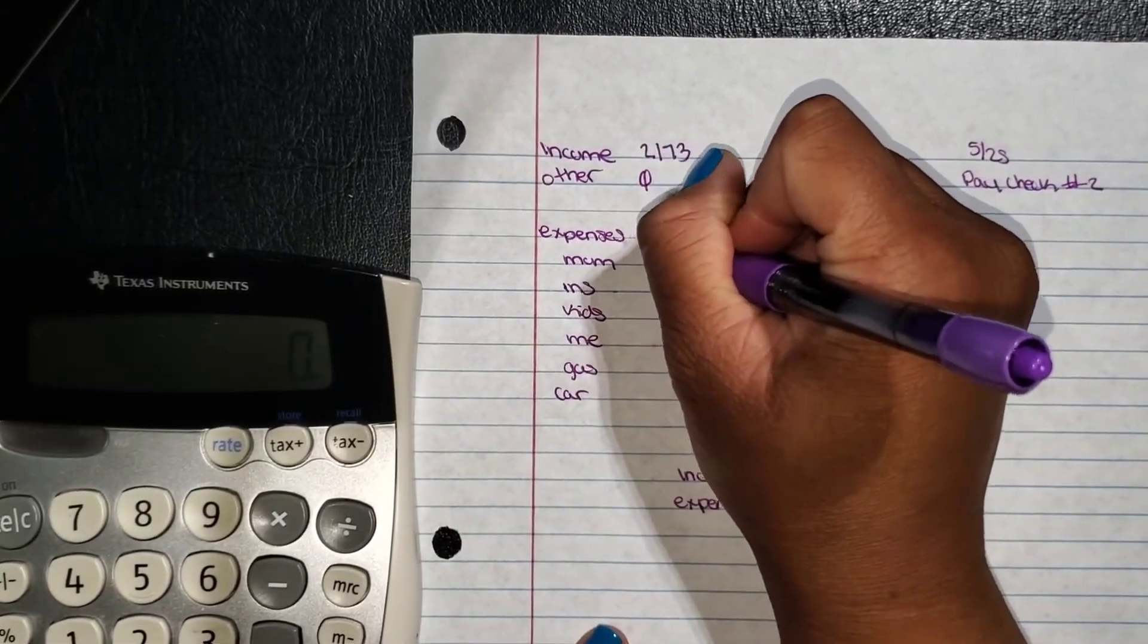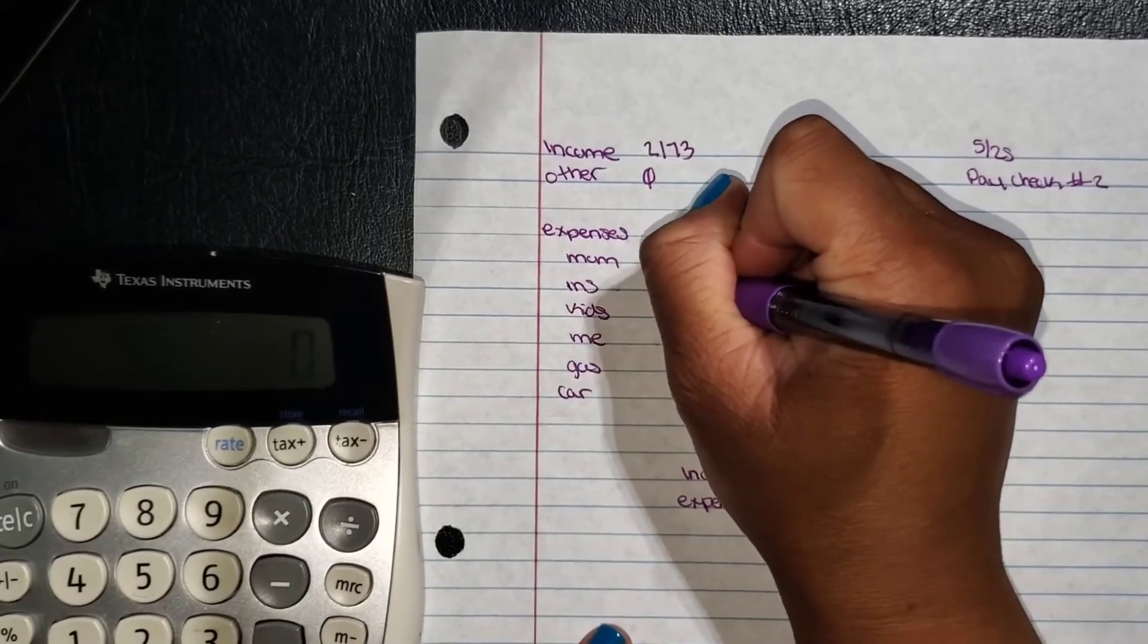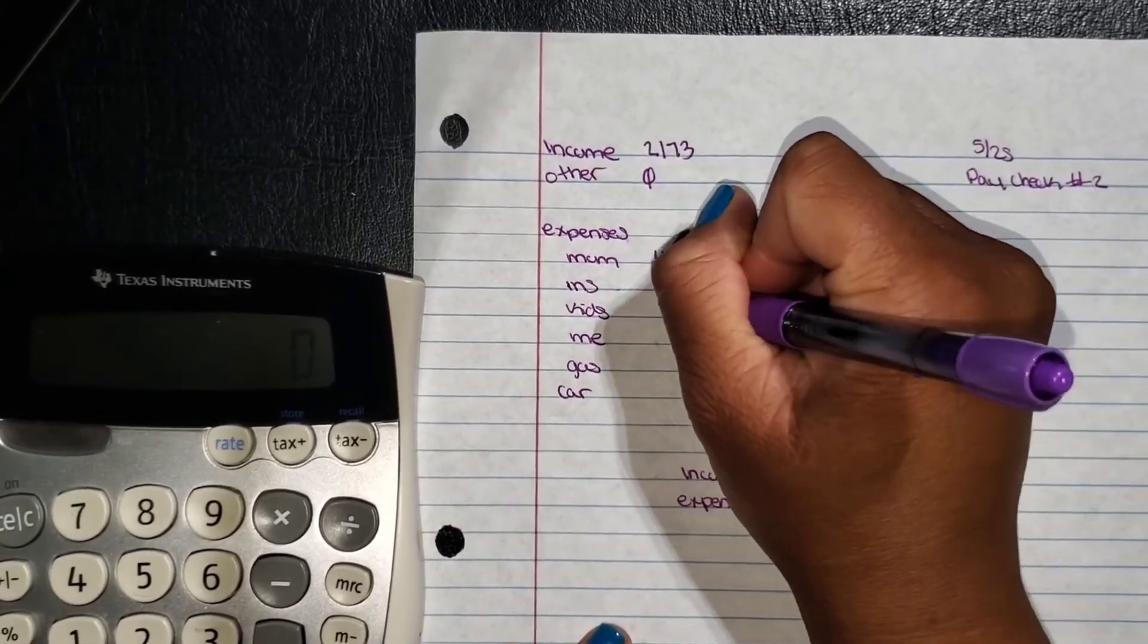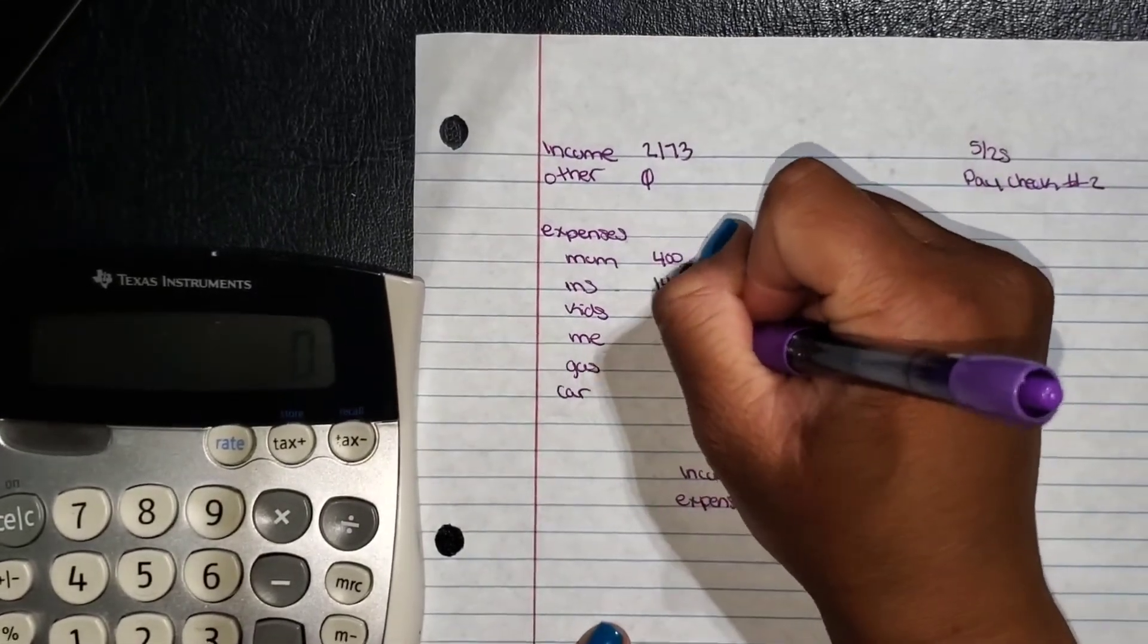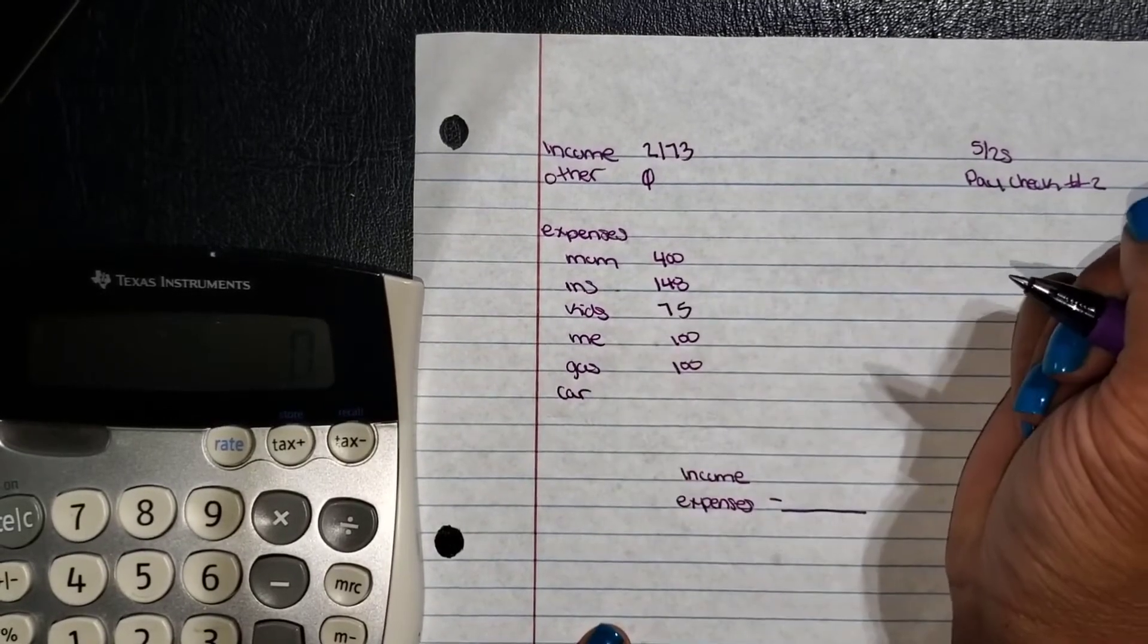I give my mom $400, pay $148 for my insurance, $75 for my kids, $100 for me. Gas is going to get $100, car.